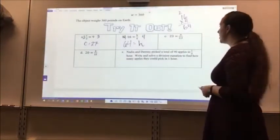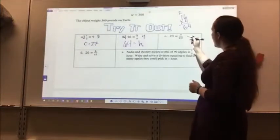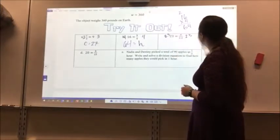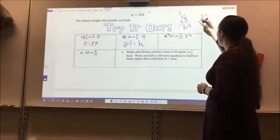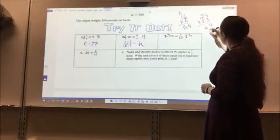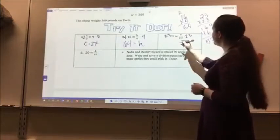For letter C, 23 equals A divided by 2.3. I multiply both sides by 2.3. So 23 times 2.3 is 52.9.